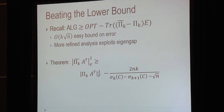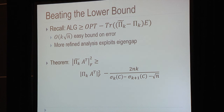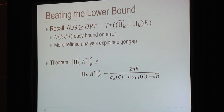Having shown the bound is tight, we also show you can beat the lower bound by a more refined analysis that exploits an eigen gap. If the gap in the eigenvalues is larger than order √N — which is often the very reason for doing principal components analysis — then we do beat the lower bound.